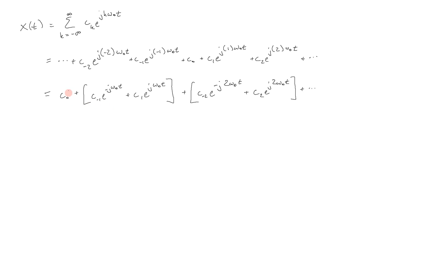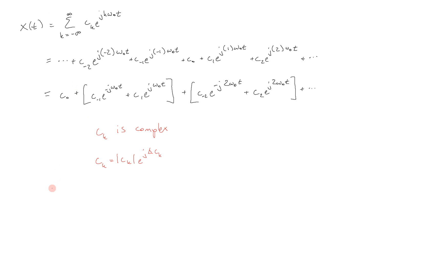Now, c sub k itself is a complex value. This means that we can write c sub k in polar notation, representing it in terms of its amplitude and its phase — in the form of some magnitude times e to the j phase. This is just a representation of any complex number; any complex number can be written this way. So if we substitute that into our previous expression, we get something like this.